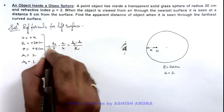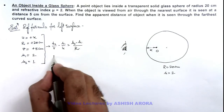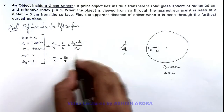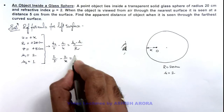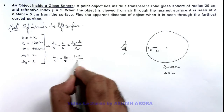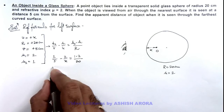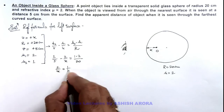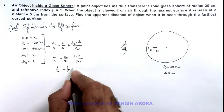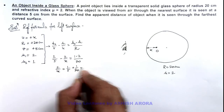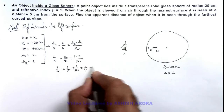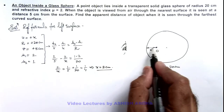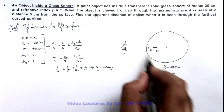Substituting these values: 1 by 5 minus 2 by x equals 1 minus 2 divided by 20. Simplifying, 2 by x equals 1 by 5 plus 1 by 20, which gives us 1 by 4, implying the value of x is equal to 8 centimeter. So the object is located at a distance of 8 centimeter from the left surface.